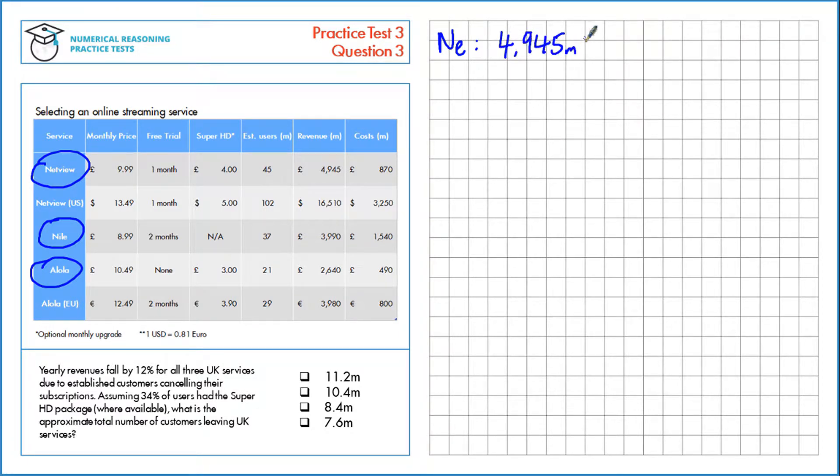We know there's a fall of 12%. A fall of 12% is a multiplier of 0.12 to find the 12% decrease. We want the decrease because we want the number of customers that leave the UK services, so this is the amount of revenue that those customers that left generated. Let's do the same thing for Niall and Alola. The same calculation for both, just with their revenues instead.